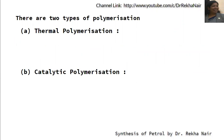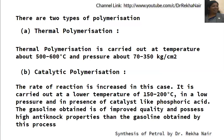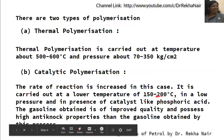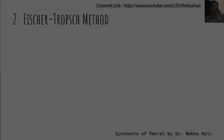In thermal polymerization, the process is carried out at a high temperature of about 500 to 600 degrees centigrade and a pressure of about 70 to 350 kg per cm². In catalytic polymerization, a catalyst like phosphoric acid is used at a lower temperature of 150 to 200 degrees centigrade and at lower pressure, converting smaller molecules into gasoline molecules. The gasoline obtained has better quality and good anti-knock properties compared to that from thermal polymerization.